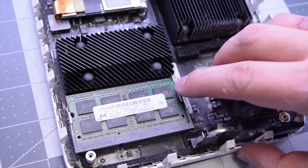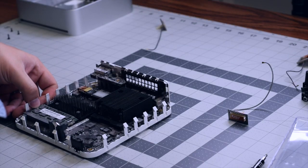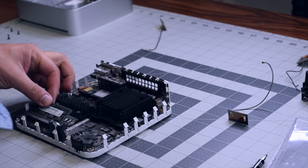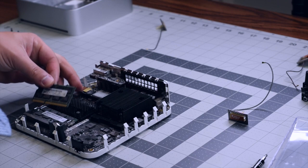Go ahead and unclip it from the right side and then from the left, as you can see here. And it should pop right up and then you can pull it out like so.